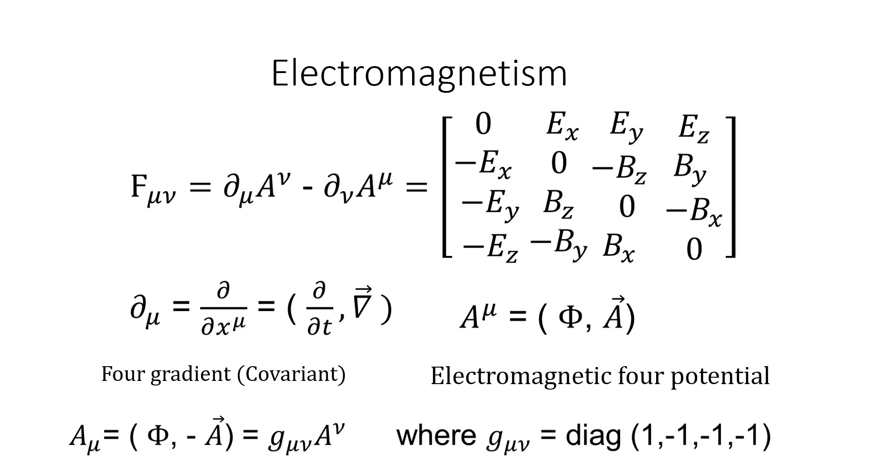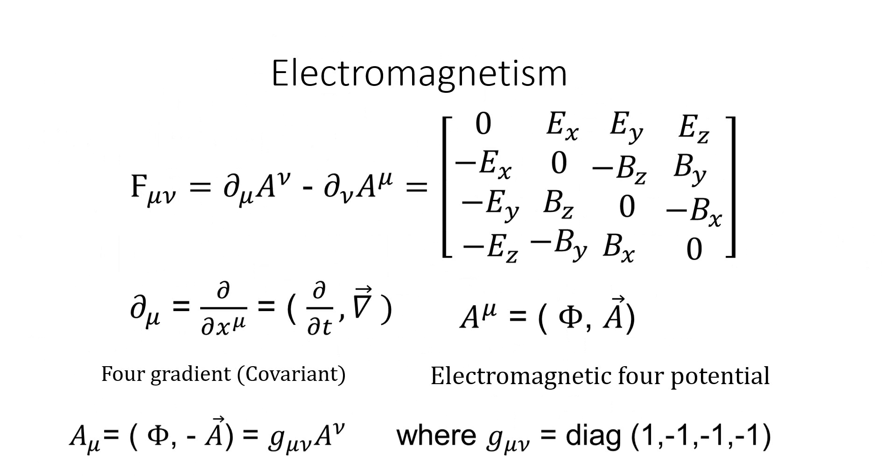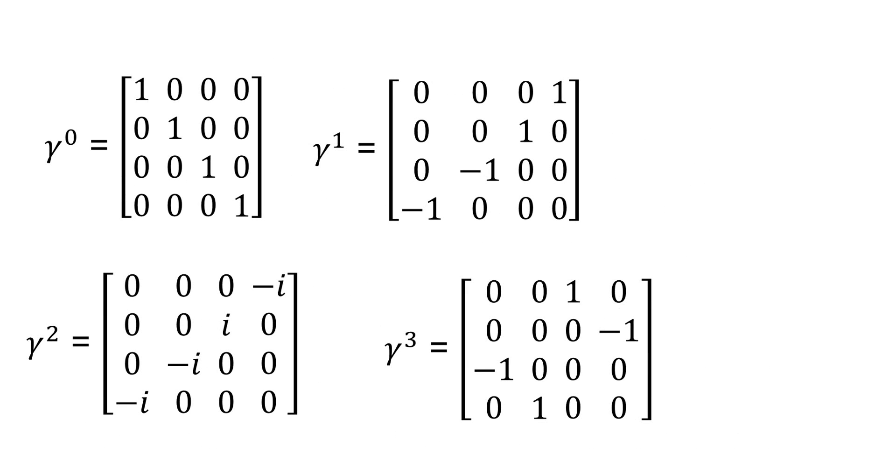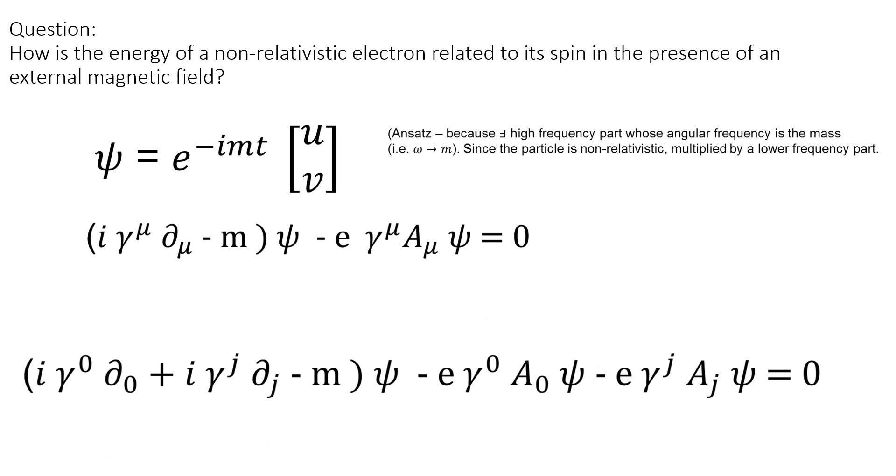This has a collection of E's and B's. I'll be defining the 4-gradient d mu partial mu as d by dt nabla. The electromagnetic 4-potential is the electromagnetic scalar potential with the vector potential. To lower these, since the Dirac equation, since this interaction term has a downstairs mu, we have to apply the metric to lower the indices, where g mu nu is eta mu nu, which is the Minkowski metric of diagonal 1, minus 1, minus 1, minus 1.